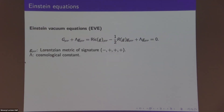Let's look at the famous Einstein vacuum equations. The Einstein tensor associated to the metric plus a multiple of the metric is zero. If it is not vacuum, the right-hand side is replaced by an energy-momentum tensor. Here G is the Lorentzian metric. For physical relevance, we work in dimension three plus one — three spatial dimensions and one time dimension — giving signature minus plus plus plus. The multiple lambda is the cosmological constant. Today we focus on the case where the cosmological constant is zero. This equation is highly non-trivial.